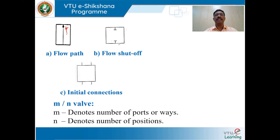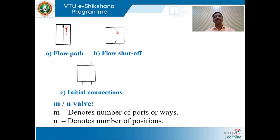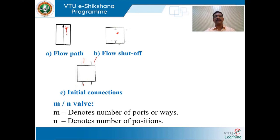Figure C shows initial connections. If you want to show 4 initial connections, draw a square and show 4 lines on it — that indicates the initial connections. Generally, valves are denoted as M×N valve, where M denotes number of ports or ways, and N denotes number of switching positions.